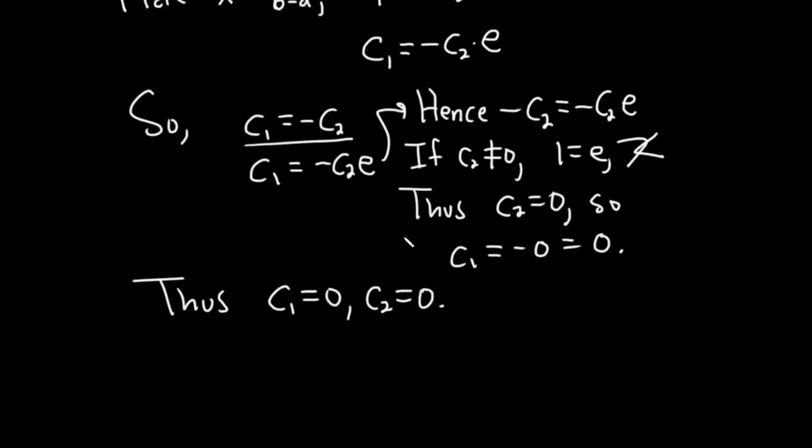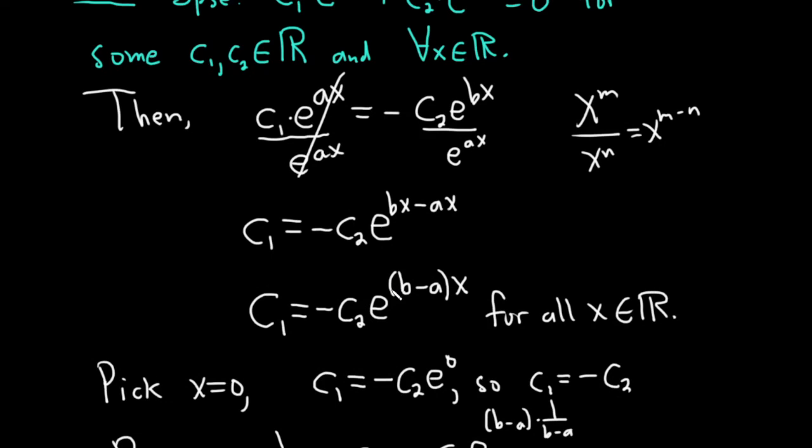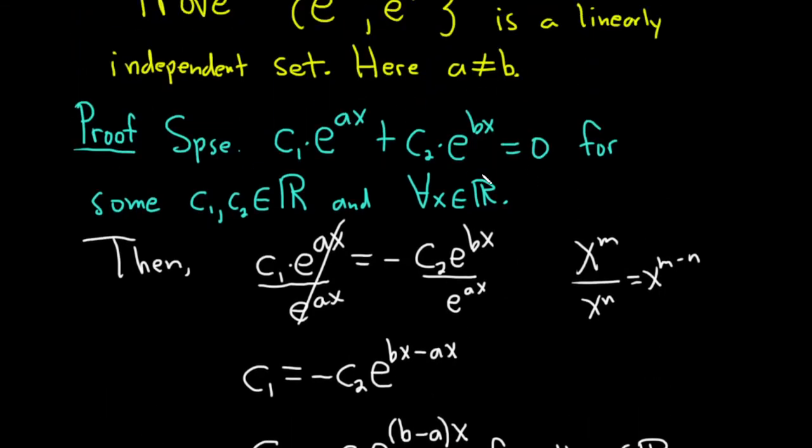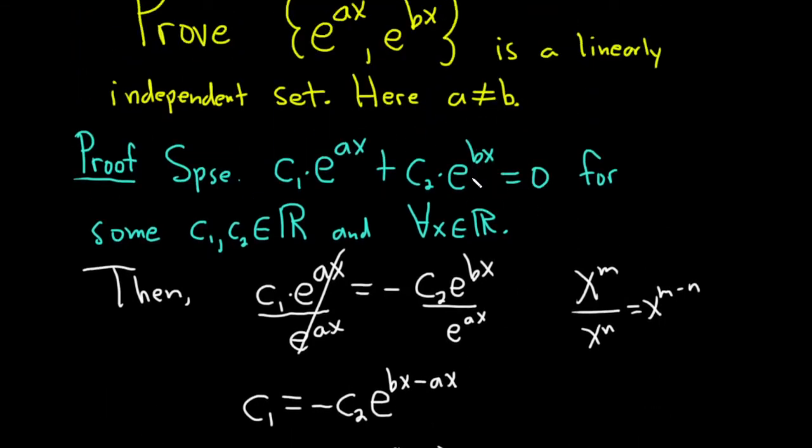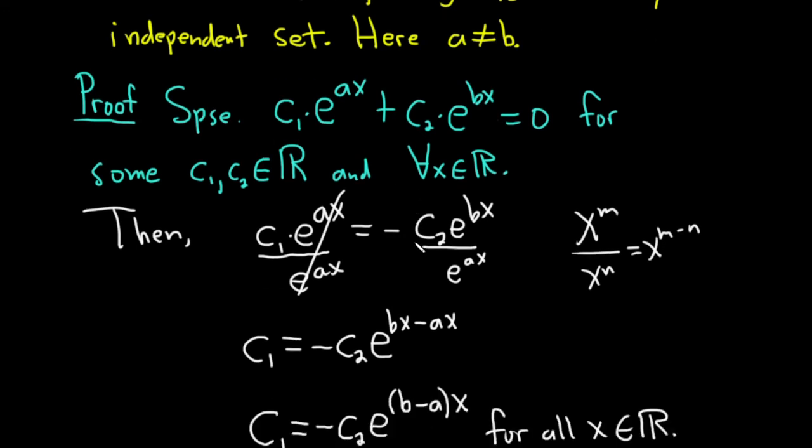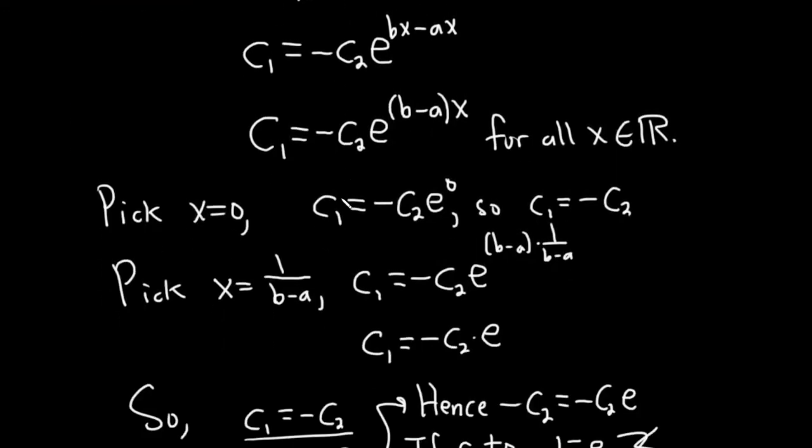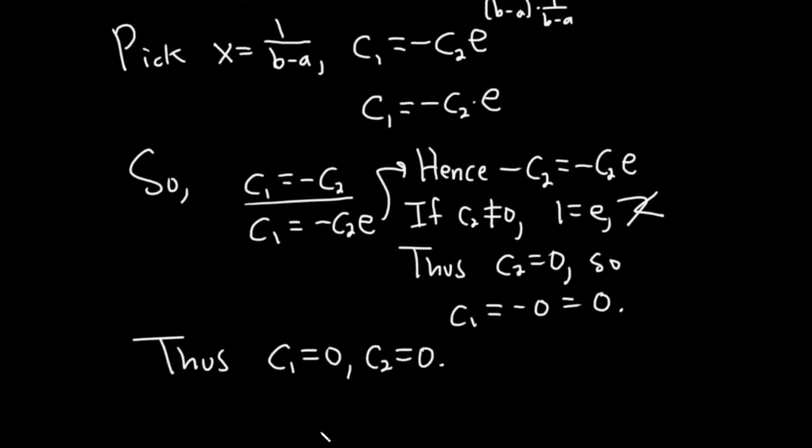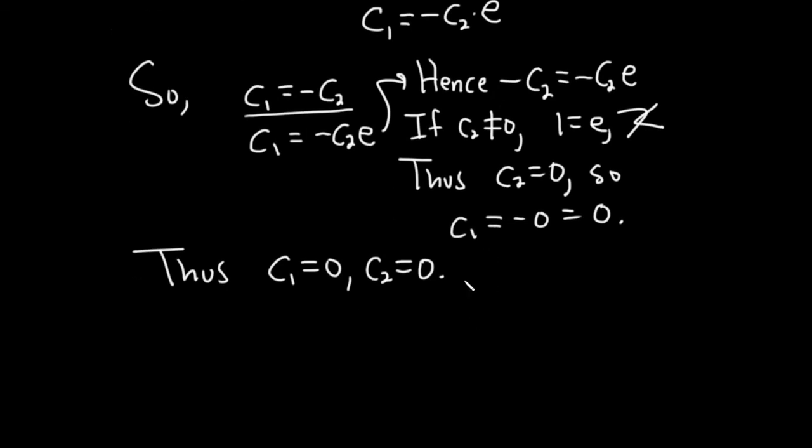So we started with a linear combination of functions that were identically equal to zero, right? The zero function. And it's true for all x and for some c's. And we showed that those c's, you know, they had to be zero, right? There was no choice there. It was forced. So this shows that the functions are linearly independent.